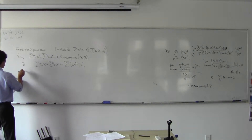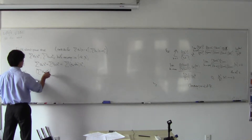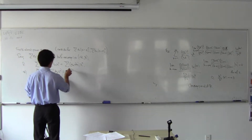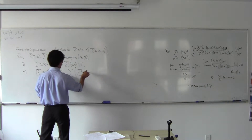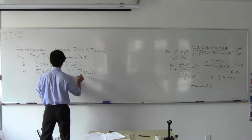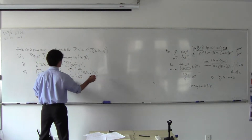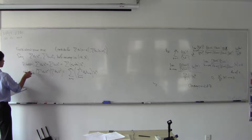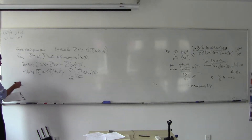The second one is a little bit hard to write down. Summation a_n x to the n times summation b_n x to the n equals summation of (sum from k=0 to n of a_k b_{n-k}) x to the n, as n goes from 0 to infinity. So the first one is addition, the second one is multiplication.